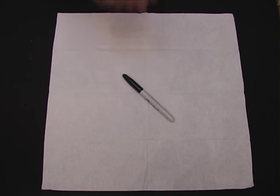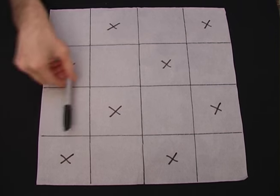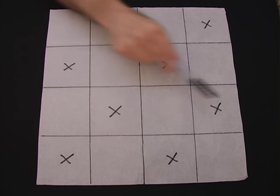For this bet, you need a square paper napkin and a marker pen. Draw a 4x4 grid on the paper, add 8 crosses like this,